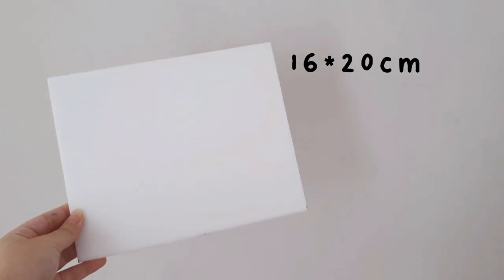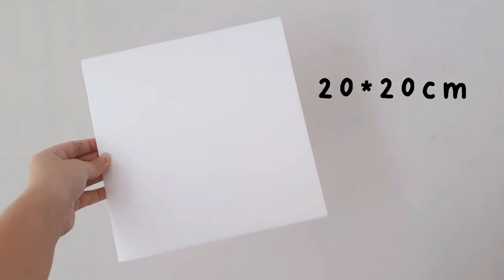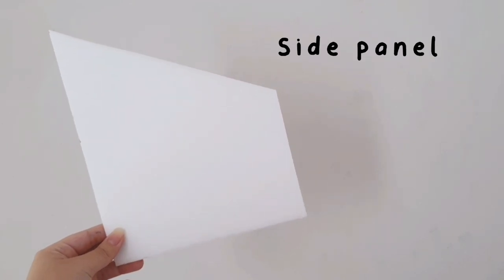Next you want to take the 16x20 and the 20x20 pieces and glue them together. This will be the base and the back part of your organizer, and please be sure to glue it strongly.